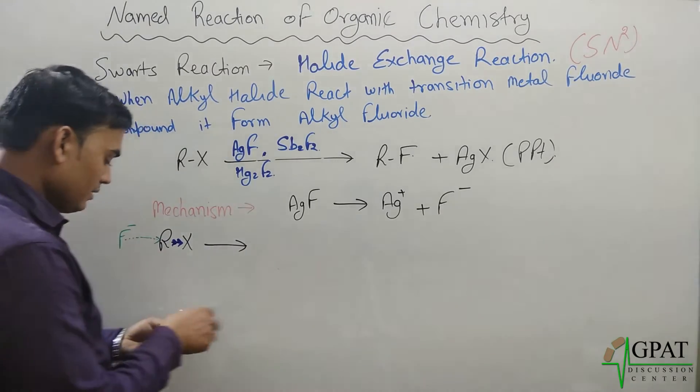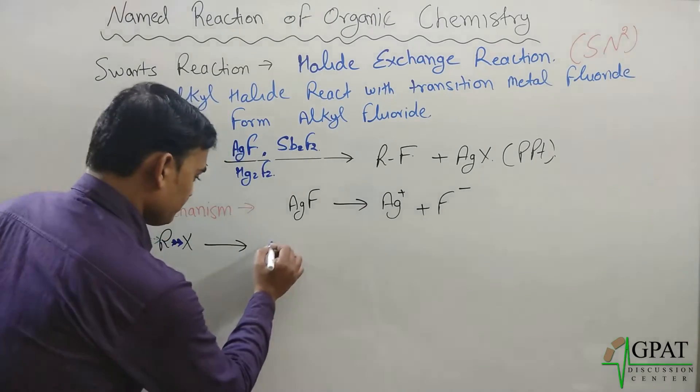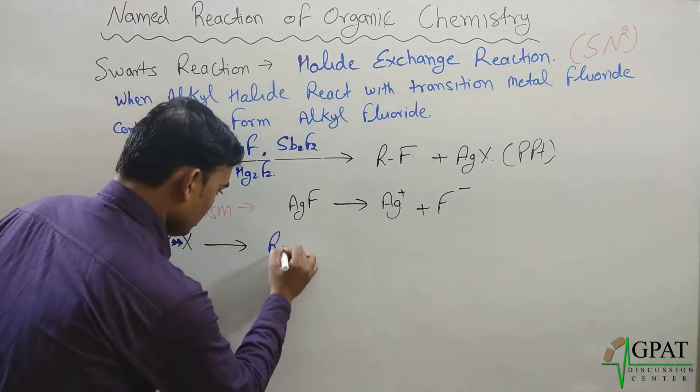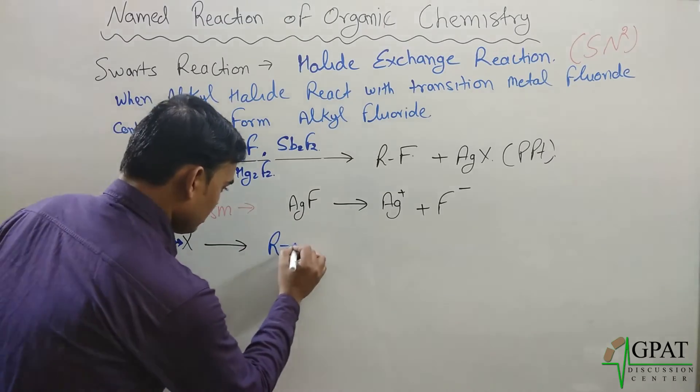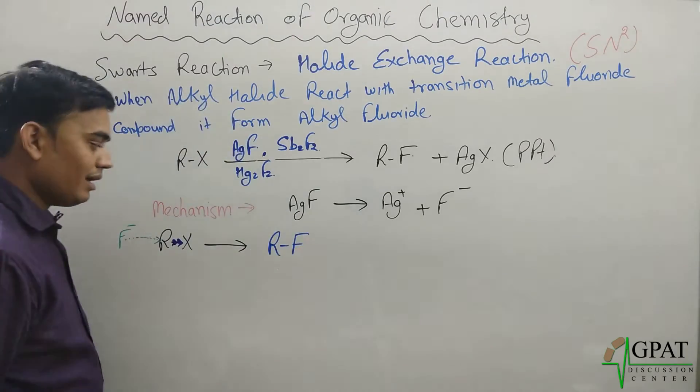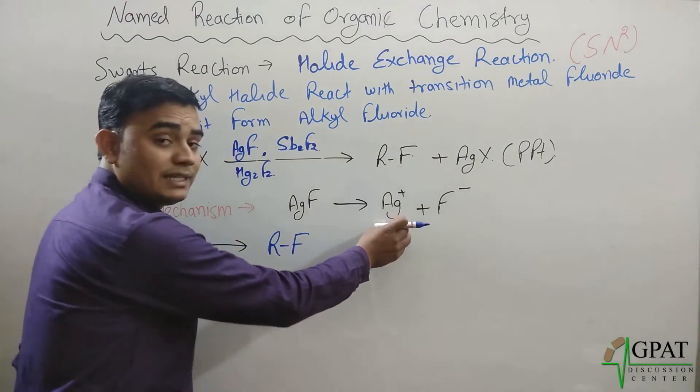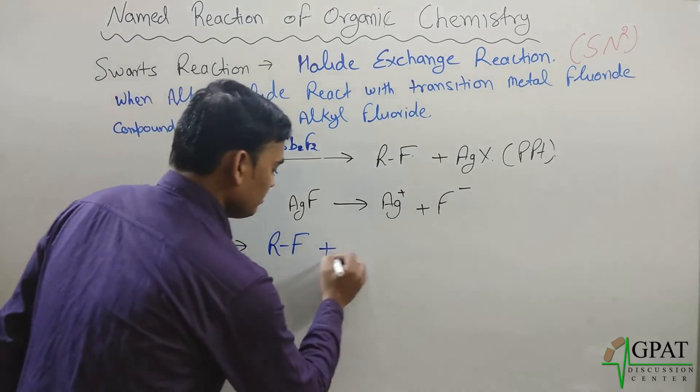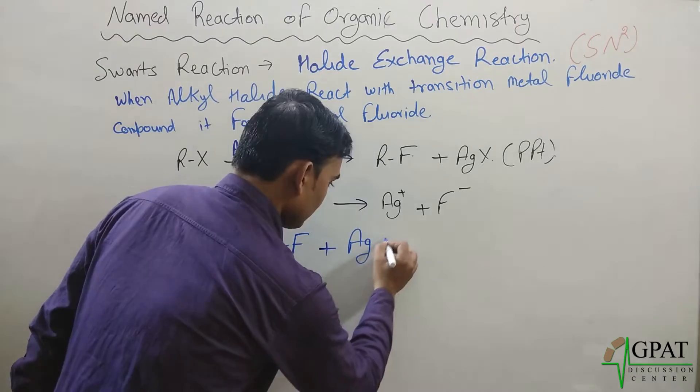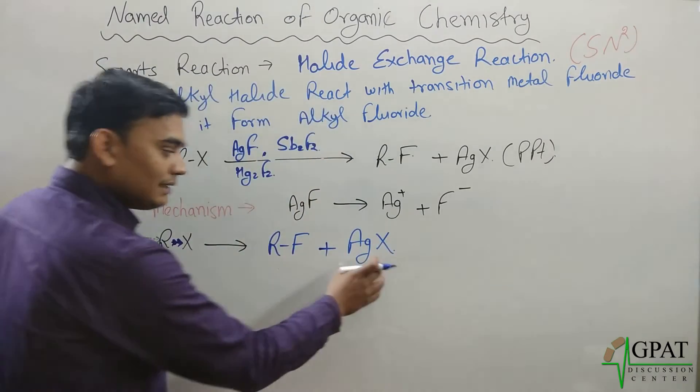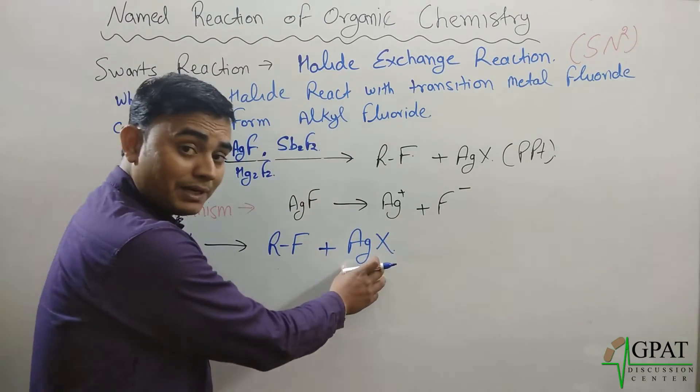this RX bond will be shifted towards this halide compound. So now, the fluorine will get attached with this alkyl group. Your resultant product will form RF. And this halide will go with this silver and form silver halide. And this silver halide will get precipitated.